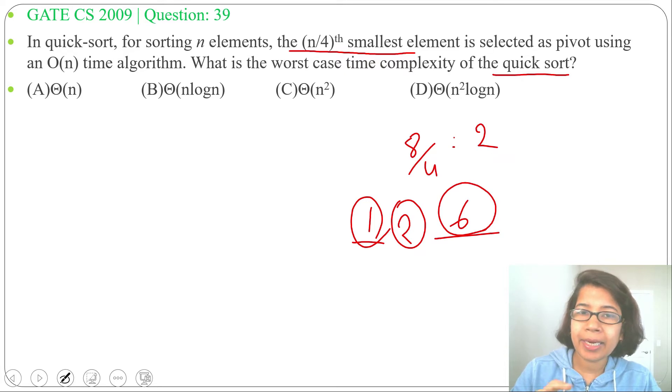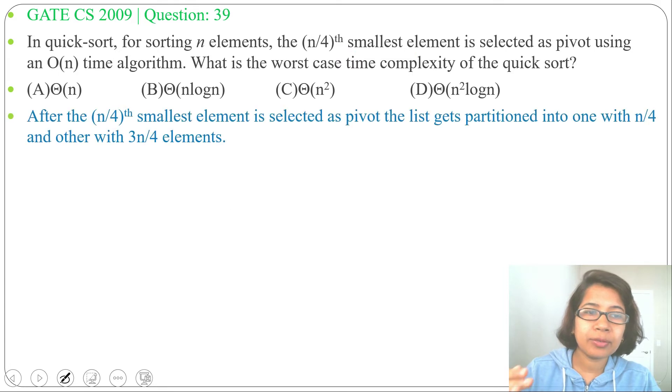If there are n elements, then one side will contain n/4 elements and the other side will contain 3n/4 elements. So after the (n/4)th smallest element is selected as pivot, the list gets partitioned into one with n/4 elements